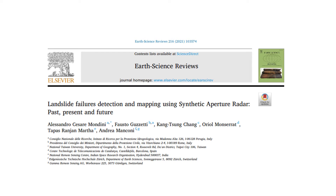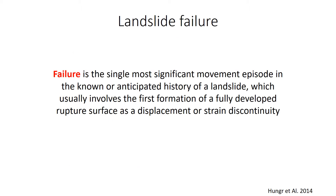Today I'm going to share some of the results of a critical literature review carried out with the listed authors on the use of airborne and space-borne SAR imagery to detect and map landslide failure. With 'failure,' we refer to the single most significant movement episode in the known or anticipated history of a landslide, in particular to the first formation of the fully developed rupture surface.